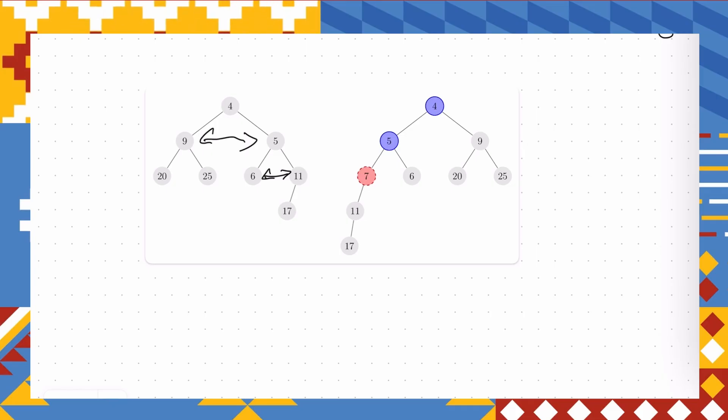Now the new node is 11. 11 is bigger than 7. So we just add 7 and put everything else as a left subtree of our new node.